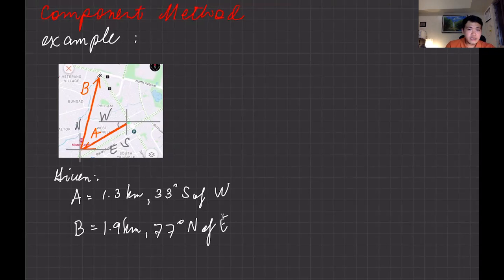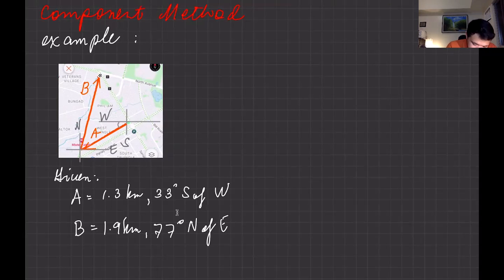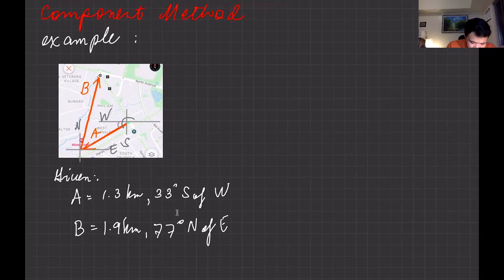Take note that in the component method, we are going to use the angle with respect to the positive x-axis. So even if we have 33 degrees south of west, what we're going to use is that angle measured from the positive x-axis. I will show you this later.